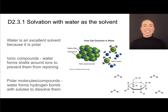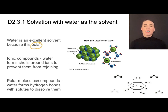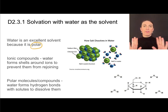Water is an excellent solvent and it's water's polarity that really gives it that ability to dissolve solutes. When water is dissolving ionic compounds like salt, the water forms shells around ions to prevent them from rejoining. The partially positively charged hydrogens surround negative ions and the partially negative oxygens surround positive ions, taking apart ionic compounds and preventing them from getting back together.